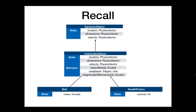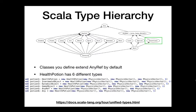Recall from last lecture we had this subtype hierarchy: DynamicObject extended by InanimateObject, which was extended by Ball and HealthPotion. DynamicObject also extended GameObject, and GameObject implicitly extended AnyRef, which extends Any. So a class like HealthPotion ends up having six different types through this type hierarchy.